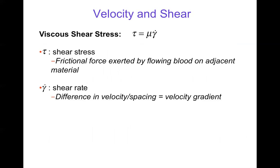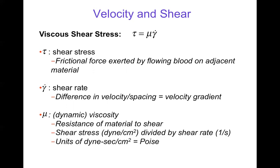Tau is a frictional force exerted by flowing blood on adjacent material, which could be other blood or could be the wall. Gamma dot is the shear rate—the difference in velocity divided by spacing, or a velocity gradient. Mu is the dynamic viscosity, which is resistance of a material to shear. If you look at the units of shear stress, dynes per centimeter squared, and shear rate, one over seconds or inverse seconds, you get the units for viscosity of dynes seconds per centimeter squared, which is called a Poise in CGS units. So tau is mu gamma dot. If we know the shear rate or the velocity gradient and the viscosity, we can get the shear stress tau.